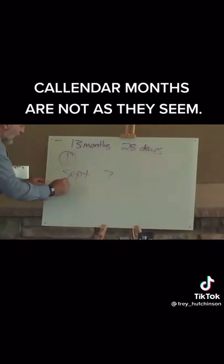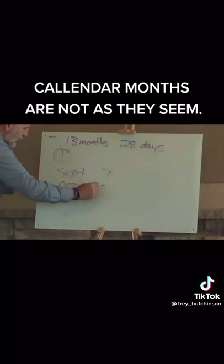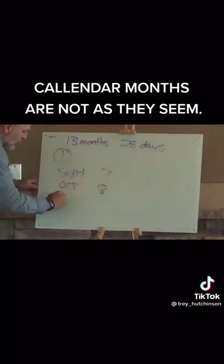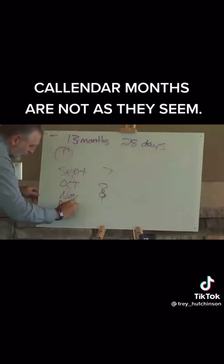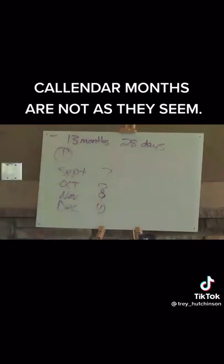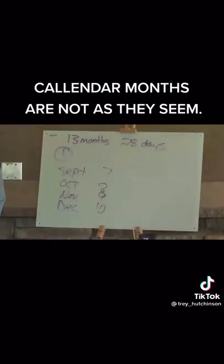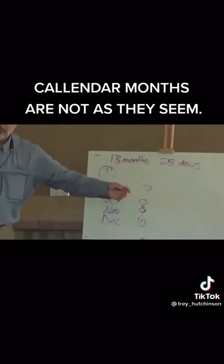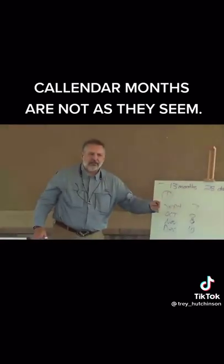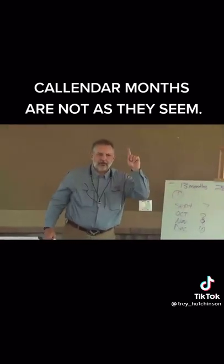What does 'Oct' mean? Eight. What does 'Nov' mean? Nine. What does 'Dec' mean? Ten. They were supposed to be the 7th, 8th, 9th, and 10th months. Jan is 11, Feb is 12, March is 13, and April is our first month.